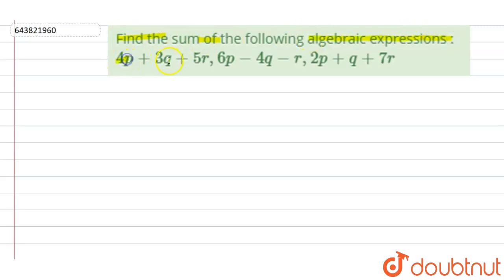The expression is given as 4p plus 3q plus 5r, 6p minus 4q minus r, 2p plus q plus 7r. So let's add these algebraic expressions.